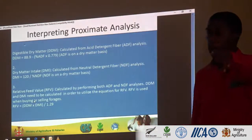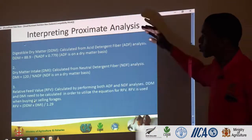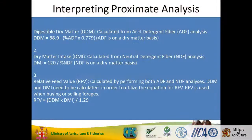These are the formulas for interpreting proximate analysis. You can look at digestible dry matter, dry matter intake using the NDF or ADF percentage, and relative feed value using the DDM and DMI. You can determine the value of your feed using these simple formulas and the results.